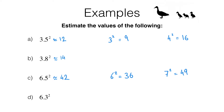Moving on to part d, we've got 6.3 squared. Now 6.3 is between 6 and 7 but a bit closer to 6, so we want an answer a little closer to 36. Also, since 6.3 is less than 6.5, 6.3 squared has to be less than 6.5 squared, so we need a number between 36 and 42. Because 6.3 is actually a little closer to 6.5, I'll estimate 40. Checking on a calculator gives 39.69, which rounds to 40.